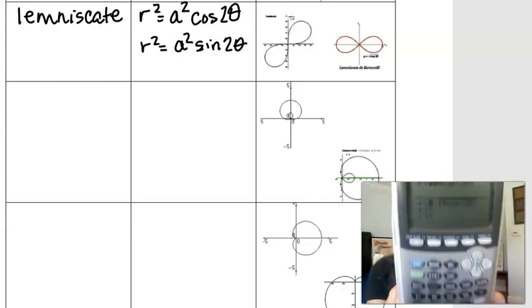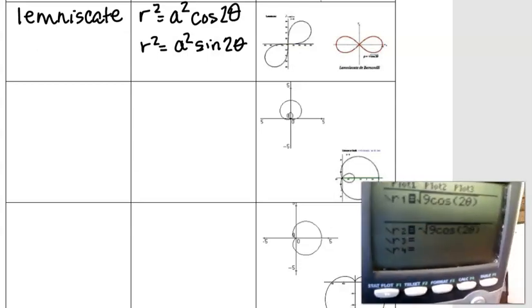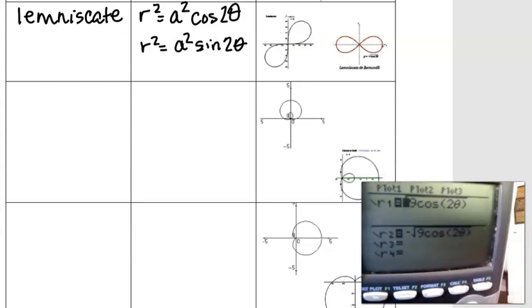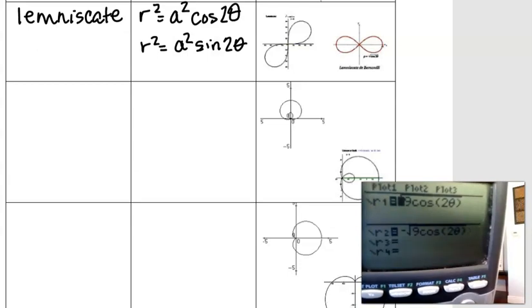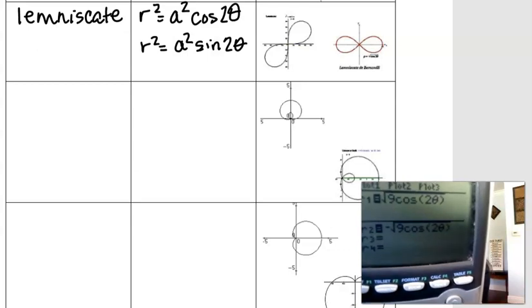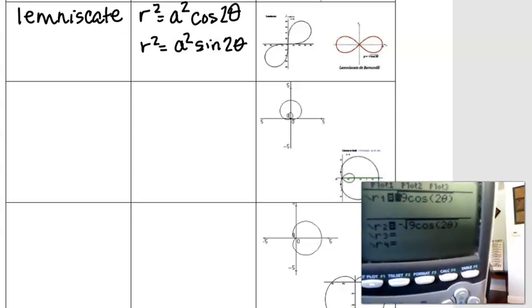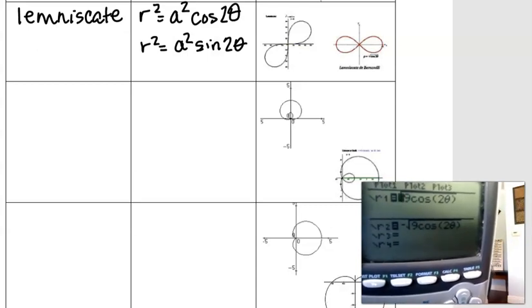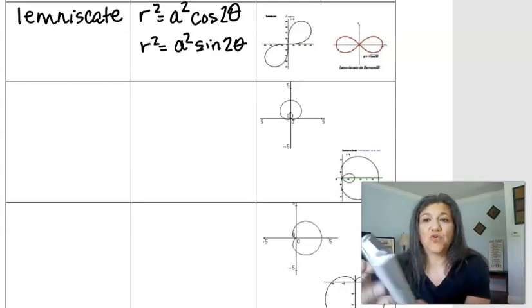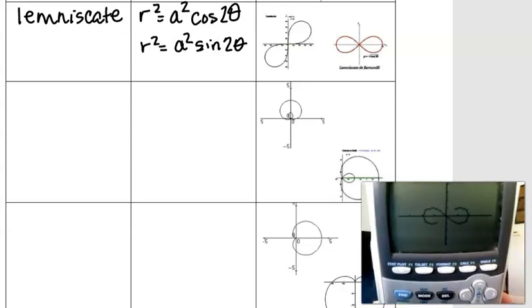So what I did here, let me show you my screen. I went to y equals, r equals, and I typed in the square root, because you can't type in r squared. So I had to do the square root. And remember, when you do square root of both sides, you have to put a plus and a minus. So what I did here was I typed in the positive square root of 9 cosine 2 theta and then negative square root of 9 cosine 2 theta. And then if I press zoom 7 or I graph, this is what it comes up with.